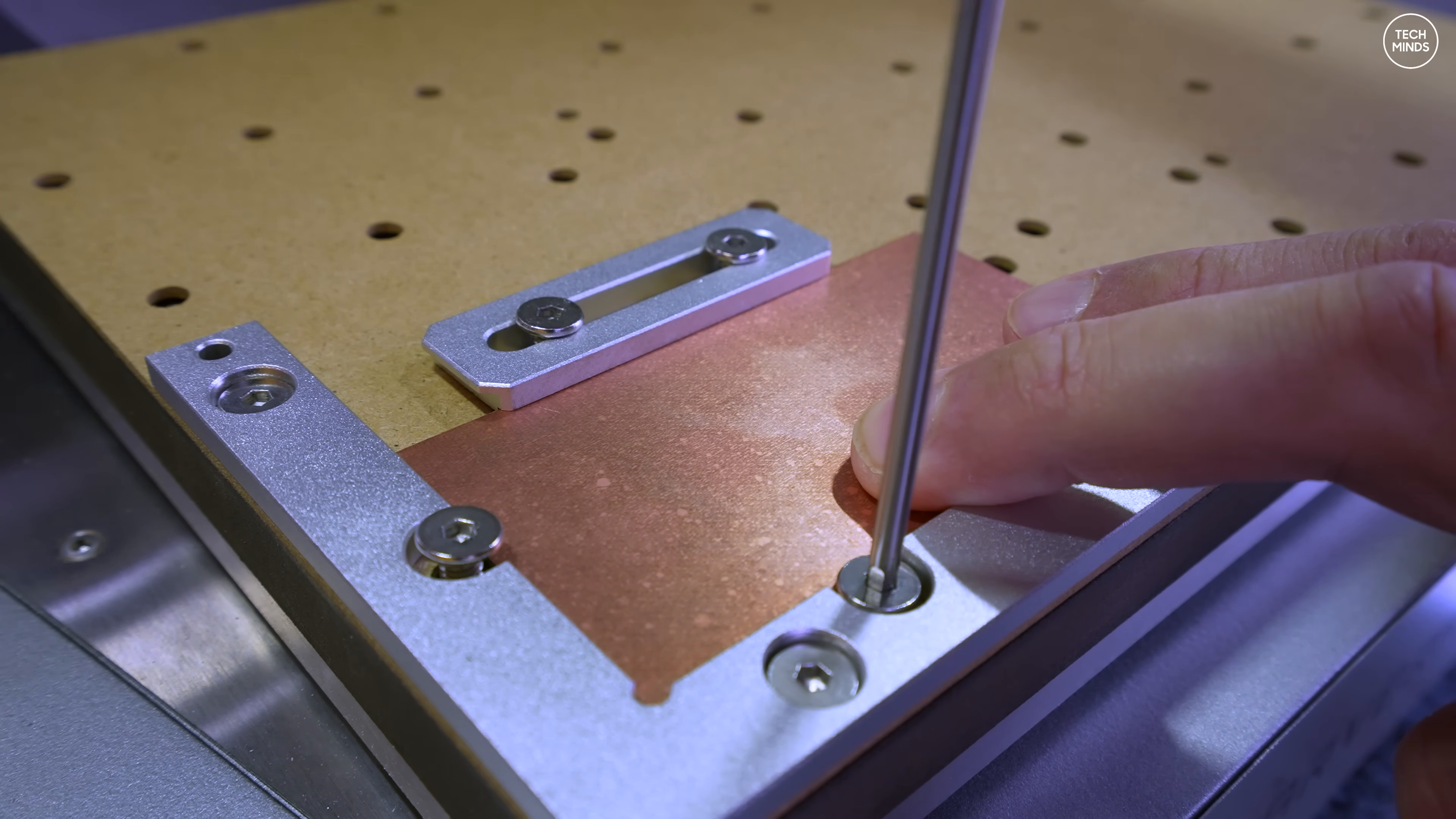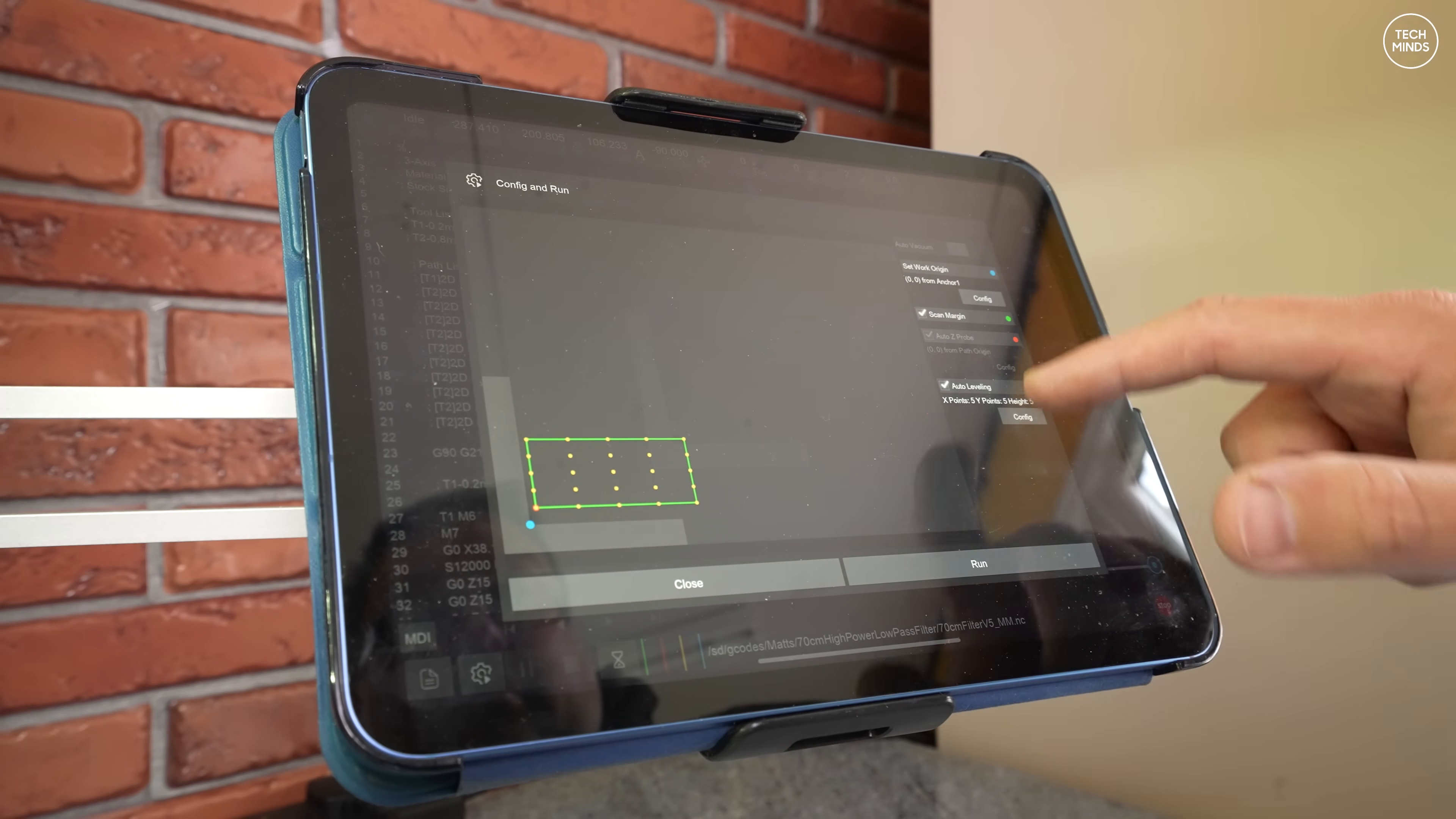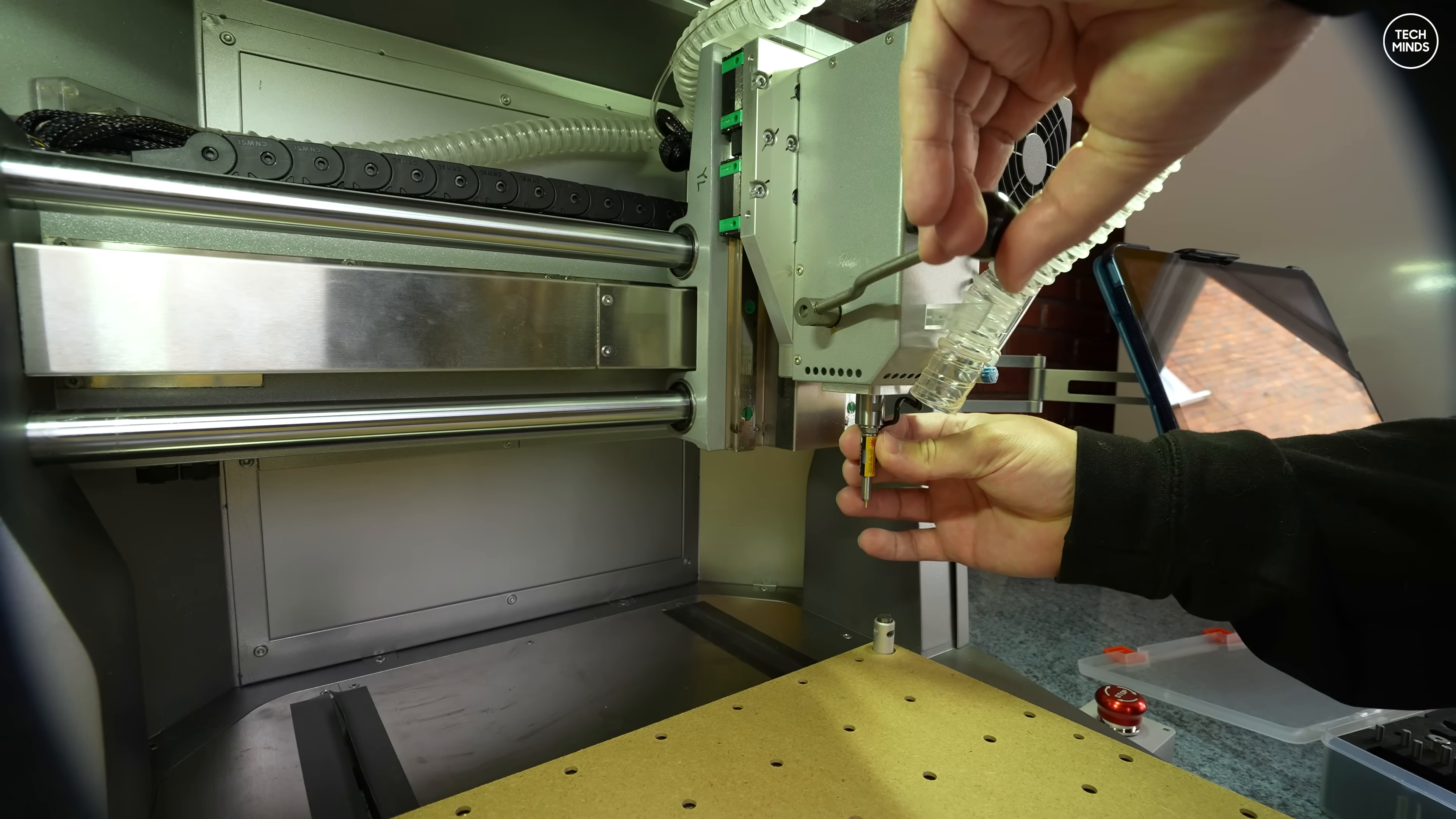With my design already converted to g-code and sent to the CNC machine's internal memory, I can actually use my iPad over Wi-Fi to call up that design and start the job. The first thing it will ask you to do is insert the leveling laser probe. Changing bits or inserting this probe is actually super easy. You just pull down this lever and slide the probe or bit into place, then release that handle upwards to make sure it's a secure fit.